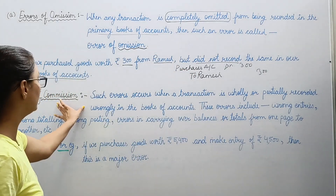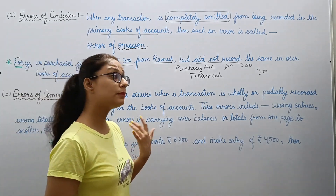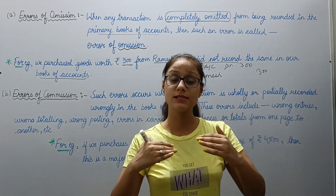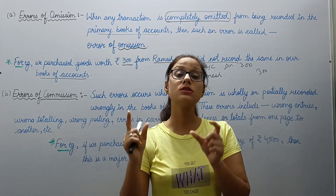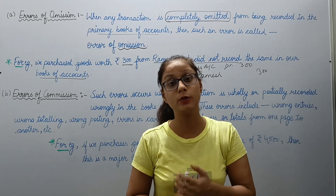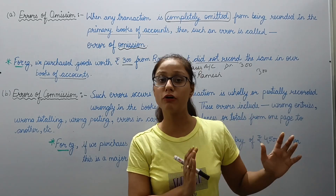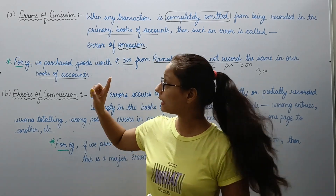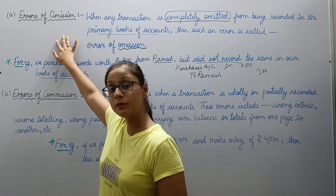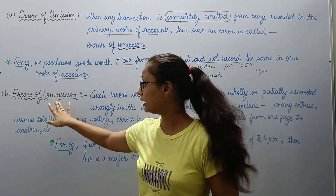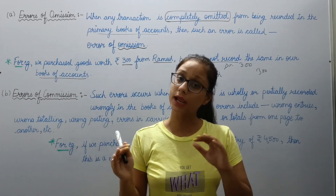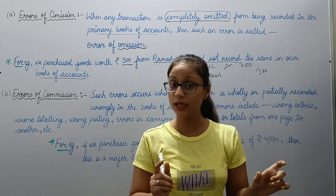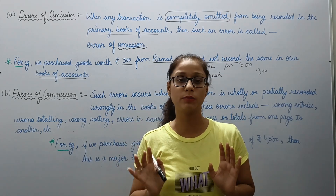Second is error of commission. Error of commission occurs when you have made a wrong entry, or wrong posting, or when you carry forward balances and you wrote the amount as 12,000 instead of 1,200, or your carry forward was wrong. You did not forget to record completely — that would be error of omission. But if we talk about errors of commission, it means you did make the entry, but either the entry was wrong, or the posting was wrong, or the balancing was wrong — something or the other went wrong.